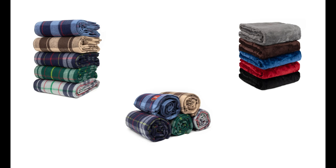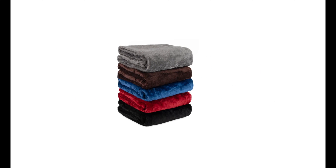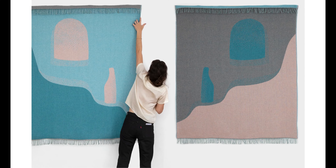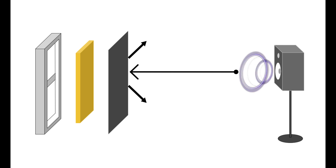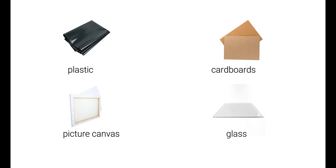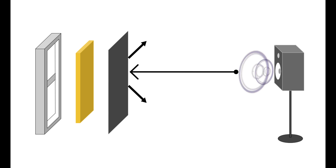Blankets are by default a sound-absorbing material and are not suitable cover materials. If you can't acquire any of the industry-standard absorption materials, blankets can come in handy for your project — you can simply throw them on your walls or put them in a frame if you want them to look a little more pleasing. You should also avoid using reflective material over your absorption material. Materials such as plastic, cardboard, and picture canvas are not suitable as cover materials, as these will reflect your sound into your space, increasing echoes instead of reducing them.